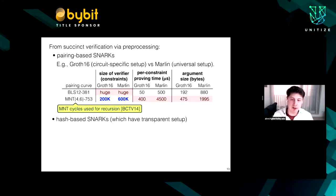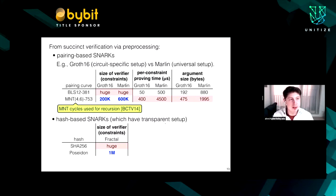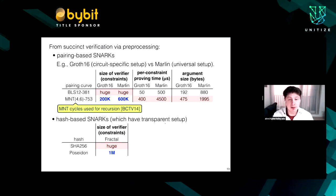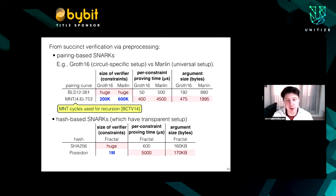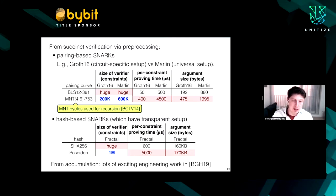In the case of hash-based SNARKs with transparent setup, if one uses a traditional hash function like SHA-256, the SNARK verifier will have tens to hundreds of millions of gates — completely impractical. But using modern algebraic hash functions like Poseidon, for a preprocessing SNARK like Fractal, one can obtain a verifier on the order of millions of constraints. This makes proving about 10 times slower, but the argument size is not much bigger. If you want recursion, you absorb these trade-offs and are happy to have a verifier that is not enormous. In the case of recursion from accumulation, there is a much more recent technique with lots of exciting ongoing engineering work.